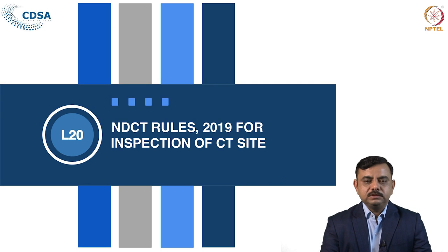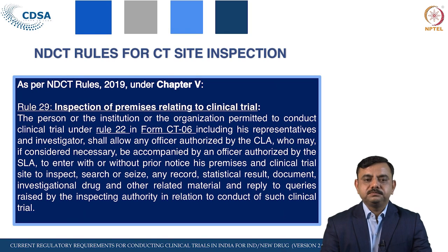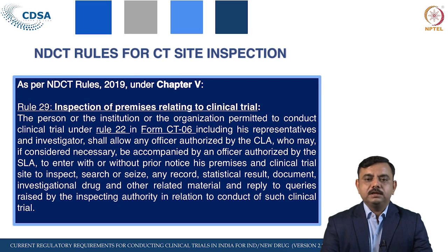In the New Drug and Clinical Trial Rule, rule number 29 relates to the inspection of premises for clinical trials, and another rule relates to inspection of BAV study centre premises. As per these rules, any applicant — organization, institution, or person — who has obtained permission from the licensing authority to conduct a clinical trial or BAV study shall allow inspection.